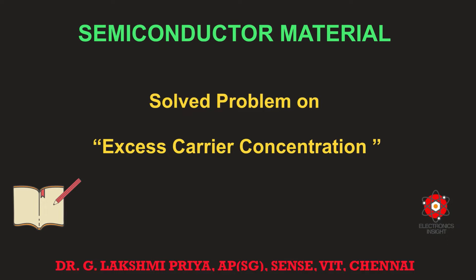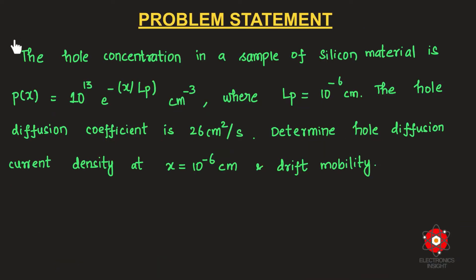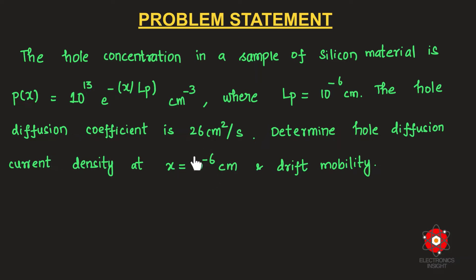The first problem: the hole concentration in a sample of silicon material is p(x), varying along the length of the sample as 10¹³ · exp(-x/Lp) per centimeter cube, where Lp (the hole diffusion length) is given as 10⁻⁶ centimeter, and the hole diffusion coefficient Dp is given as 26 centimeter square per second.